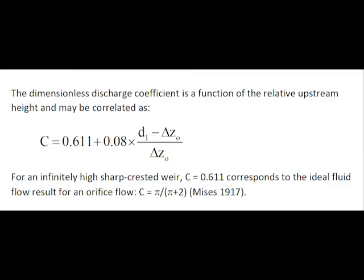The dimensionless discharge coefficient is a function of the relative upstream height, and a correlation is shown. For an infinitely high sharp-crested weir, it yields C equals 0.611, which corresponds to an ideal free flow result for an orifice flow developed by von Mises in 1917.